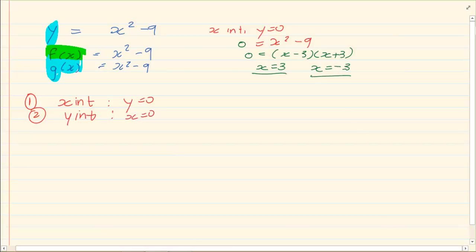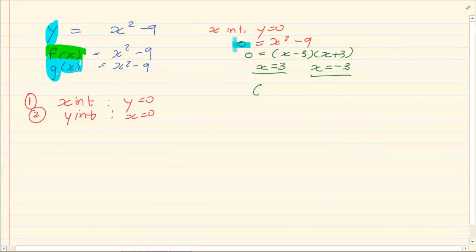Now we solve: x equals 3 and x equals minus 3. What does that mean? That means that your y is 0 and your x is 3, and your y is 0 and your x is minus 3. That is the coordinates that you're going to put on your graph.